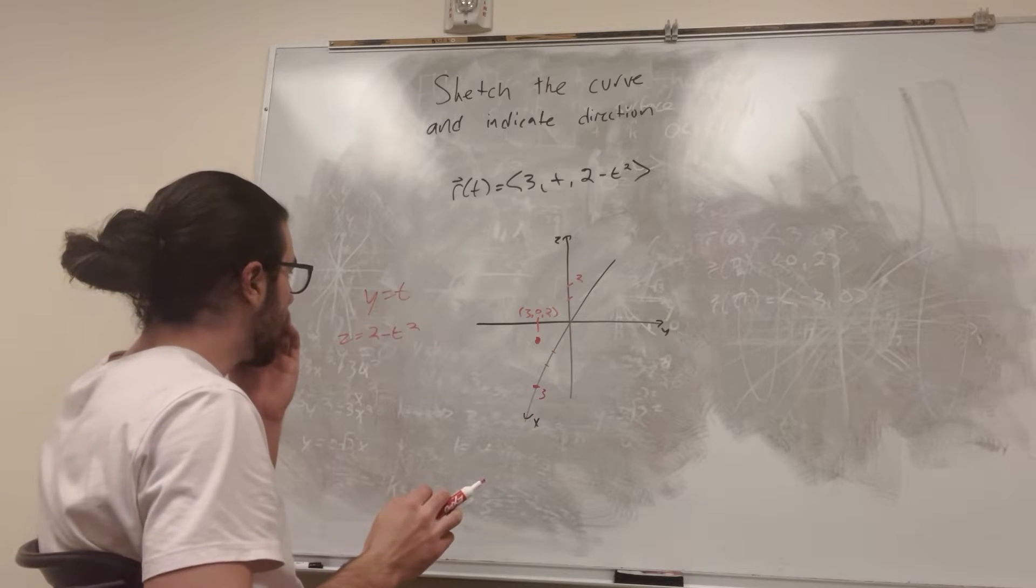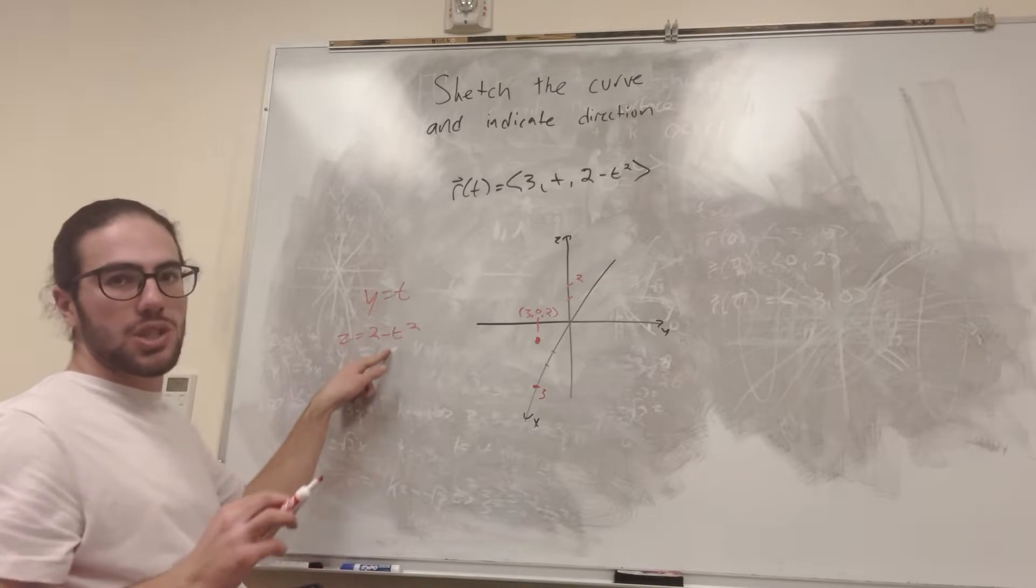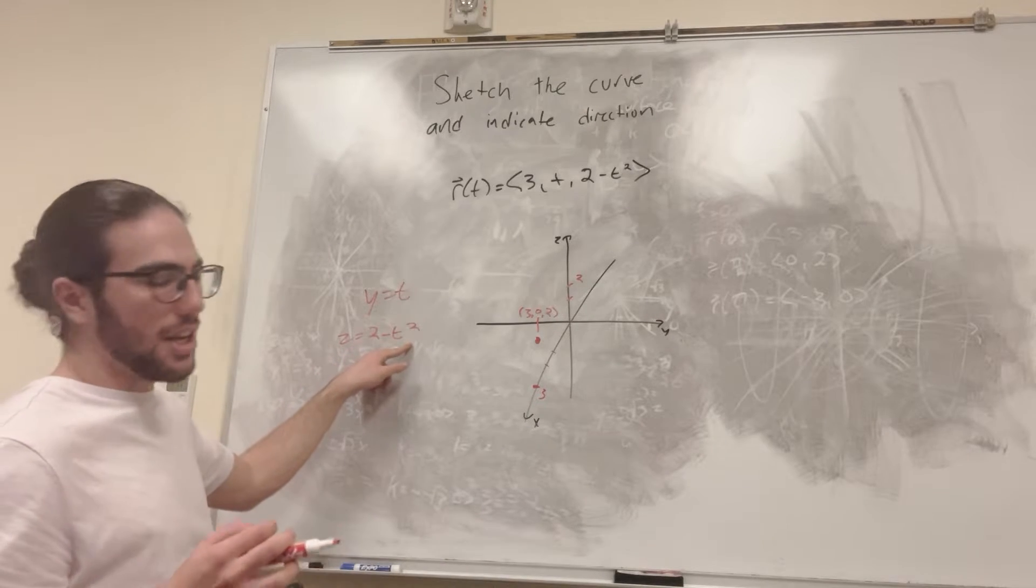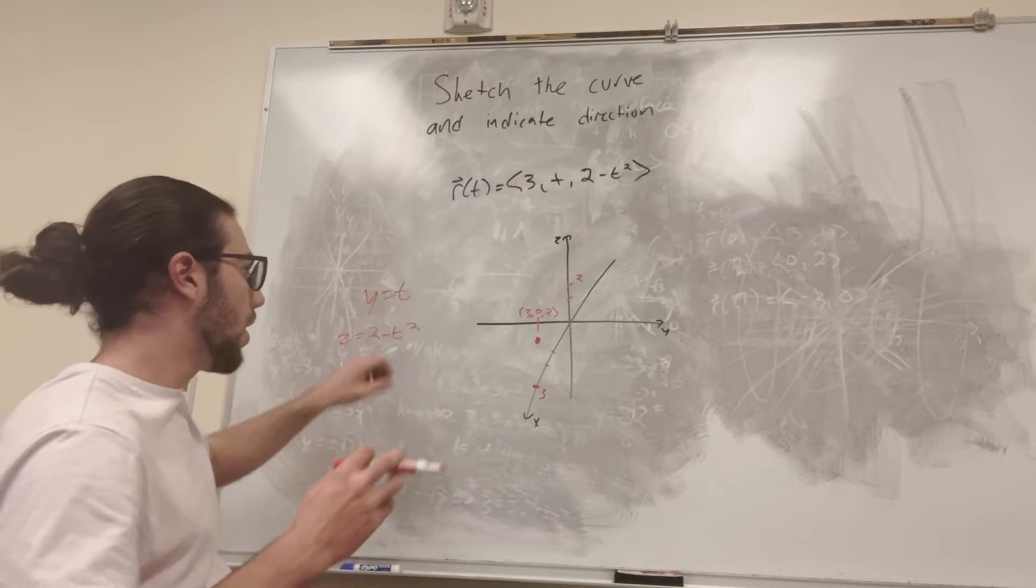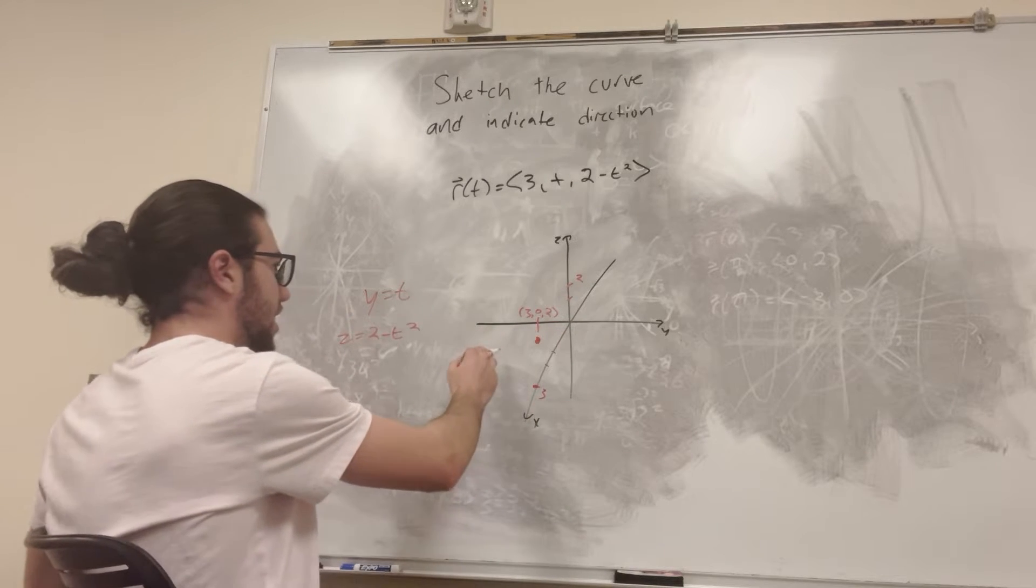So what we're going to find is that because there's a t squared, if you plug in a negative t or a positive t, it's going to be the same value. So it's going to be a parabola. So if y is equal to 1, it's going to be over here, and if y is equal to negative 1, it's going to be over here.